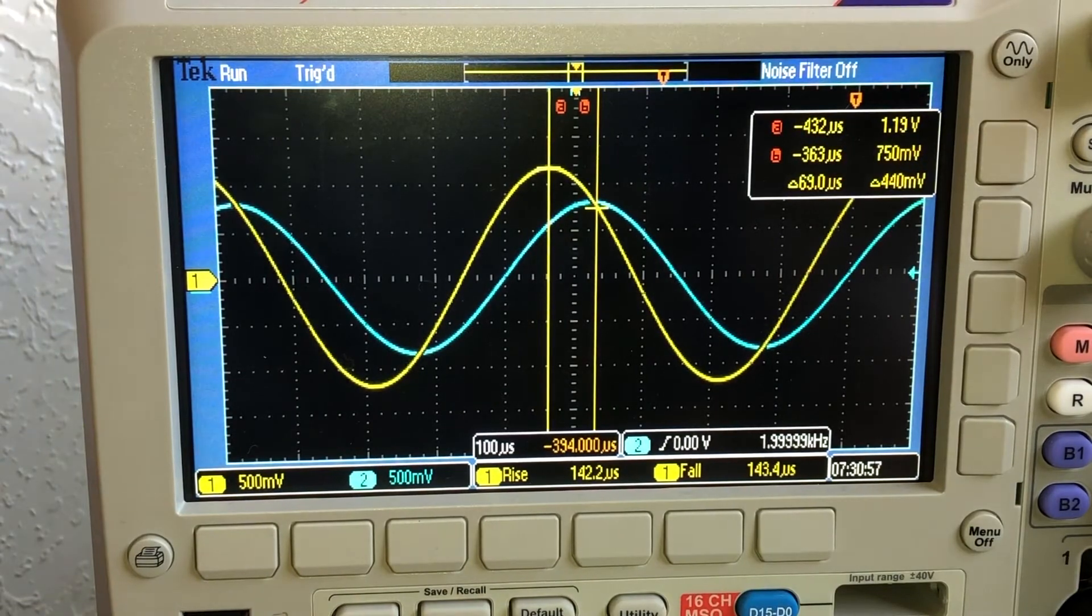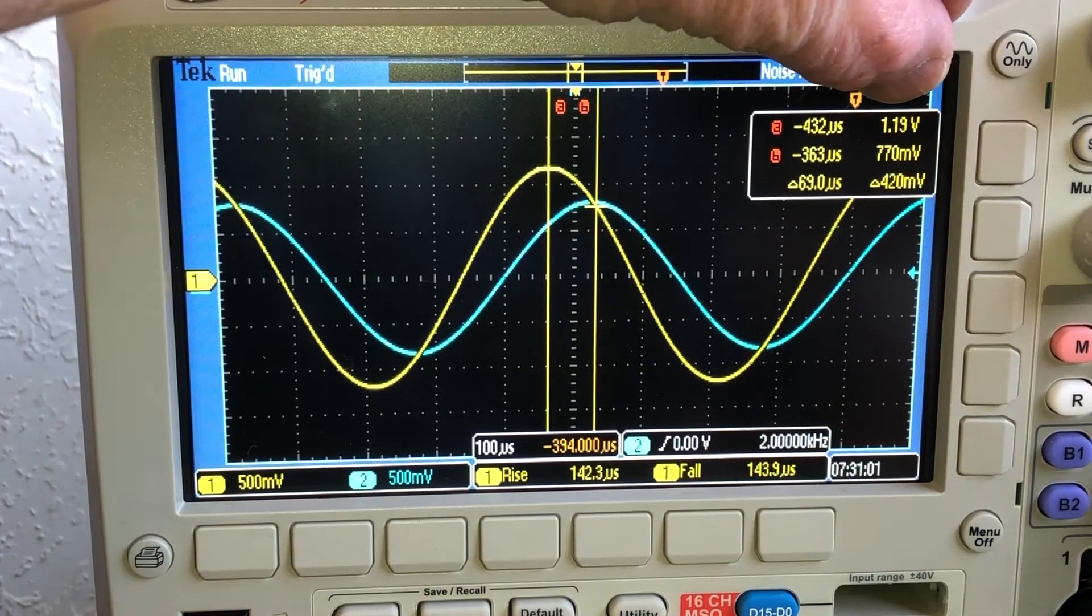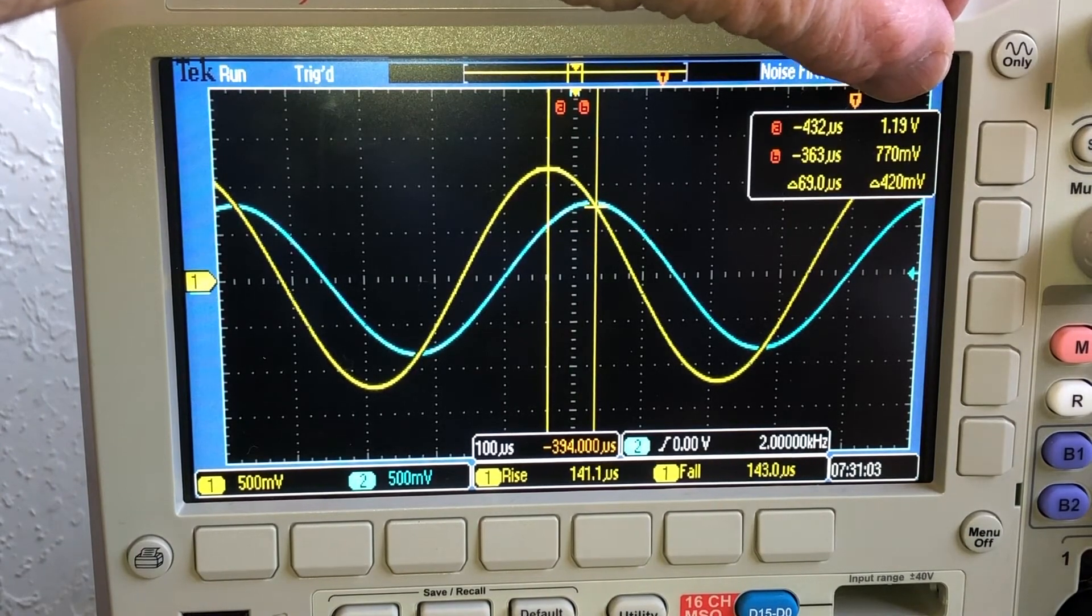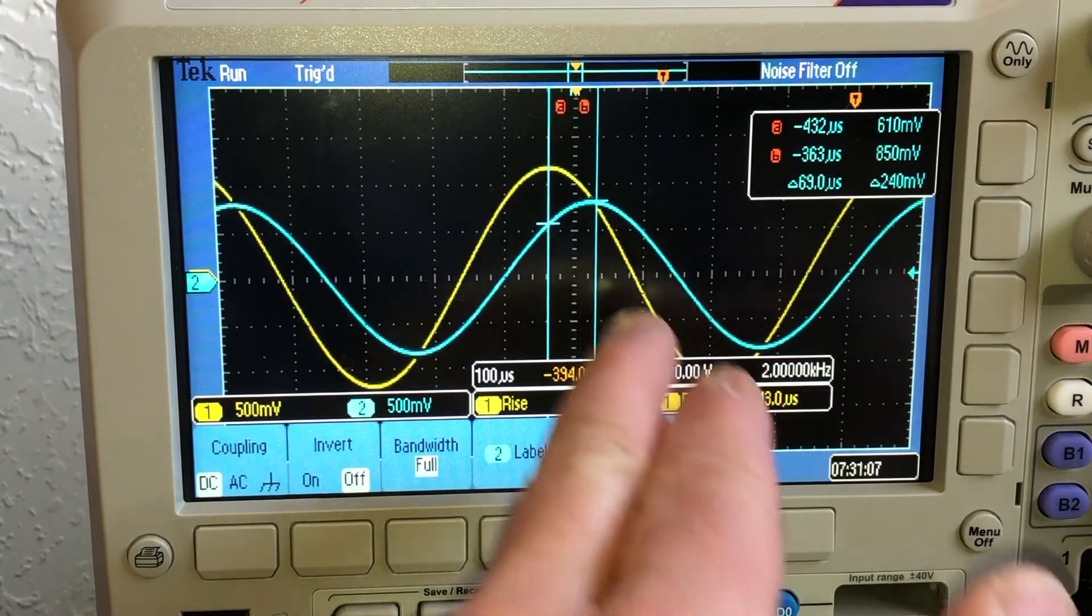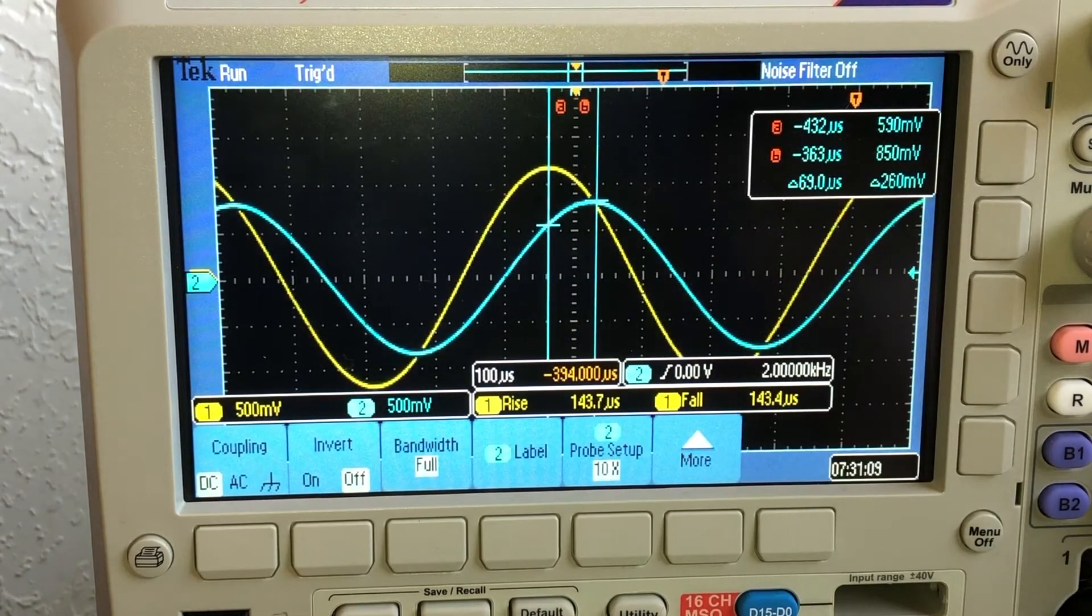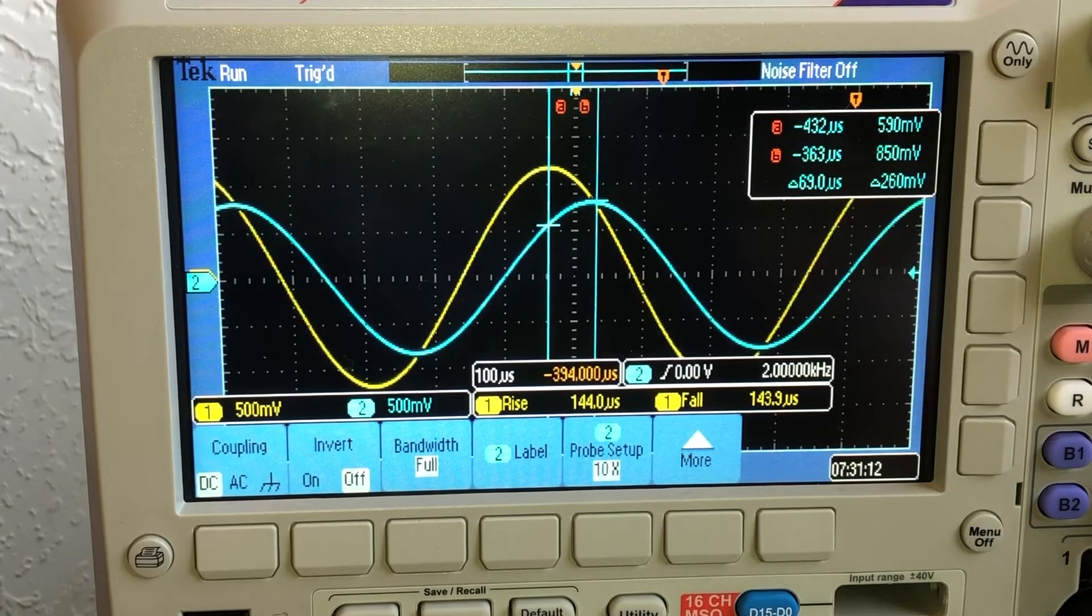At 2 kHz I'm seeing 1.19 volts across all three, and then for just the resistor I'm seeing 830 millivolts.